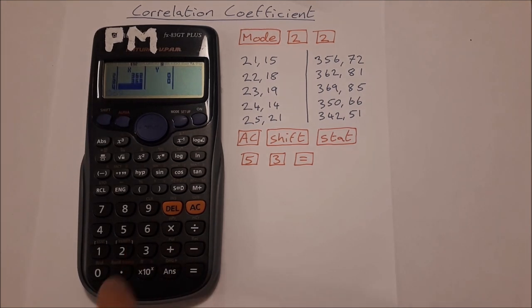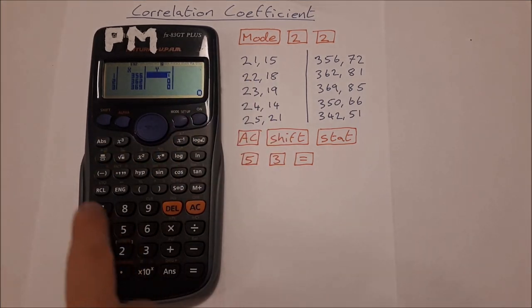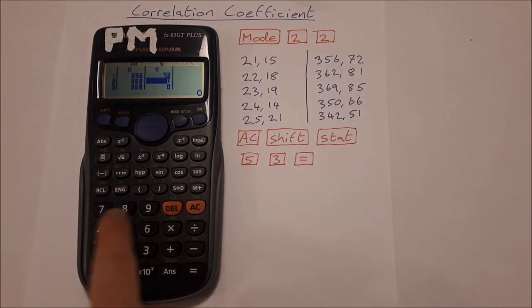Let's go back up here to the top: 72 equals, 81 equals, 85 equals, 66 equals, 51 equals.